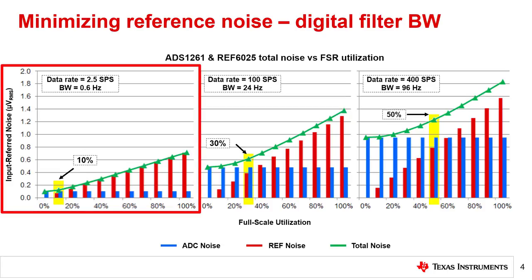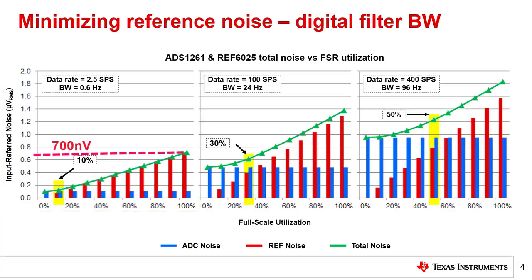The first plot shows a noise bandwidth of 0.6 hertz at 2.5 samples per second, where the total noise is only 700 nanovolts RMS at full scale.